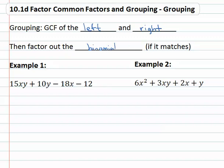Oops, GFC—I mean GCF, greatest common factor. For example, if we look at 15xy + 10y - 18x - 12, we'll see there's really nothing in common that we can divide each and every term by.